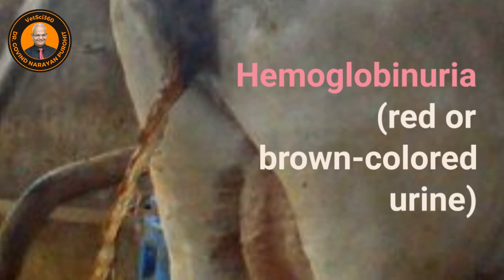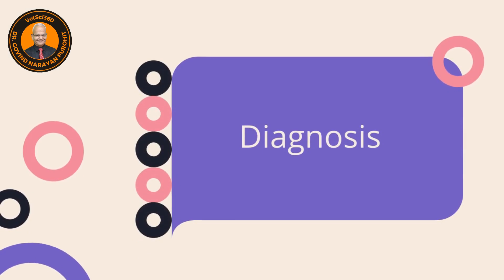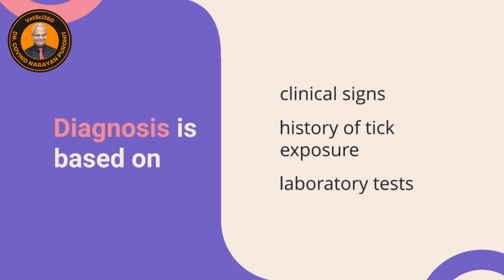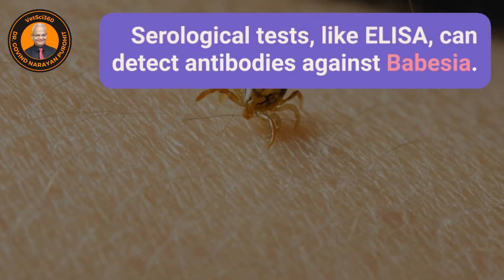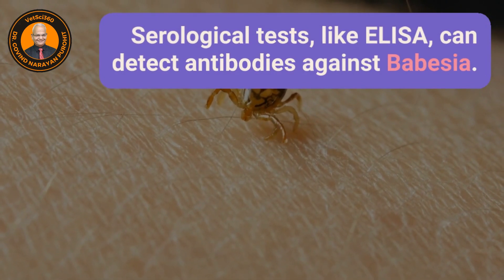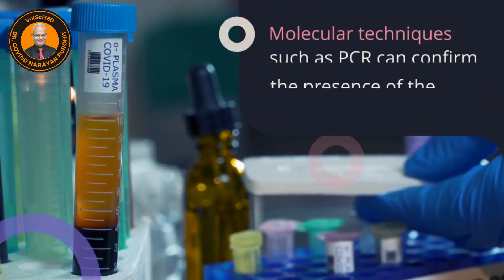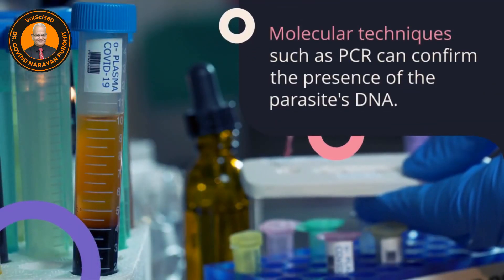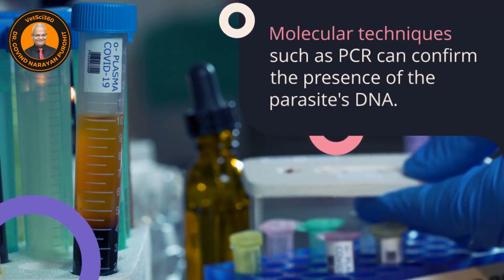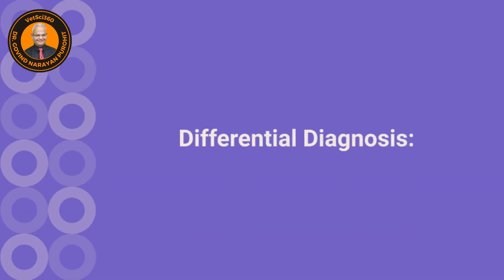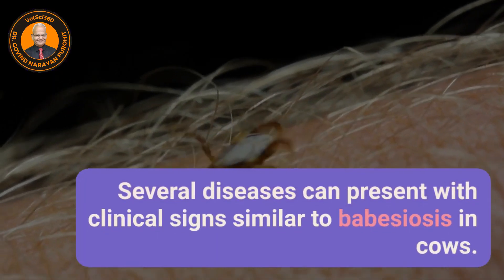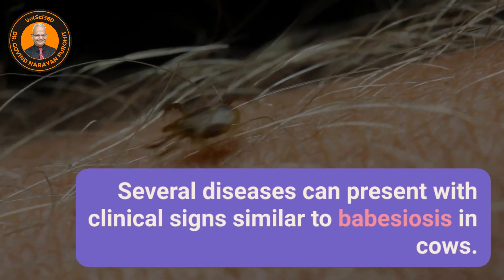For cross-bred cows, the owner notices and reports the animal to the vet. The diagnosis of babesiosis is based on clinical signs, the history of tick exposure, and laboratory tests. Serological tests like ELISA can detect antibodies against Babesia, and molecular techniques such as PCR can confirm the presence of the parasite's DNA. Hematology and blood smear observation can allow one to see the organisms in the RBCs.